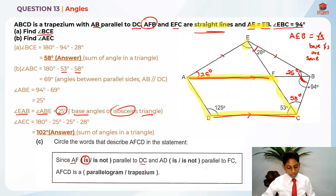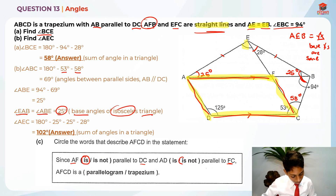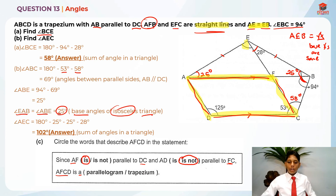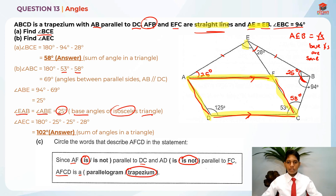Next, AD and FC — they didn't give us any information on AD and FC being parallel to each other, and based on everything, they are not parallel to each other. So AFCD has only one set of parallel sides, which is AF and DC. A trapezium only has one set of parallel sides while a parallelogram has two. So AFCD is a trapezium. I hope you understood my explanation for this question. Thank you and bye-bye! I'll see you in my next video.